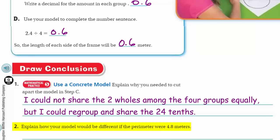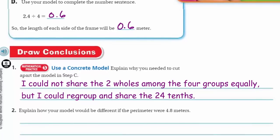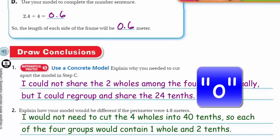Now it says: explain how your model would be different if the perimeter were 4 and 8 tenths meters. That's a great question. Well, 4 and 8 tenths meters is double the 2 and 4 tenths. But I would need to cut or separate the four wholes into 40 tenths, so each of the four groups would receive one whole. And then with what was left over — 8 tenths — each group would get 2 tenths.